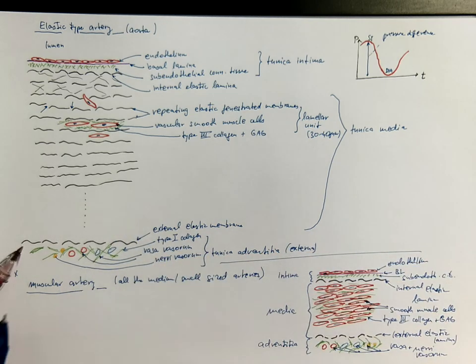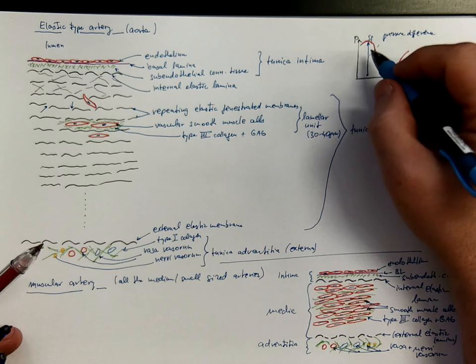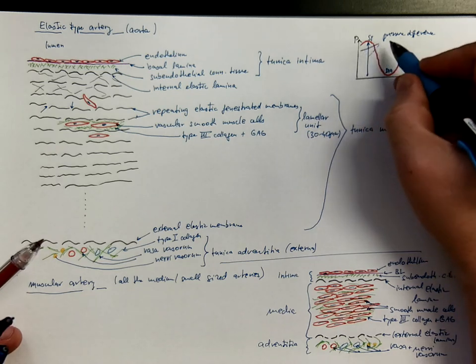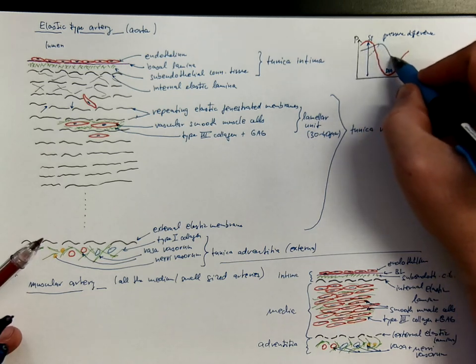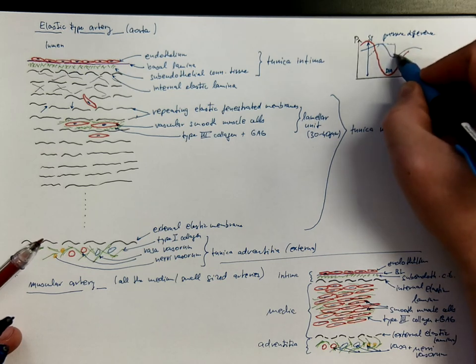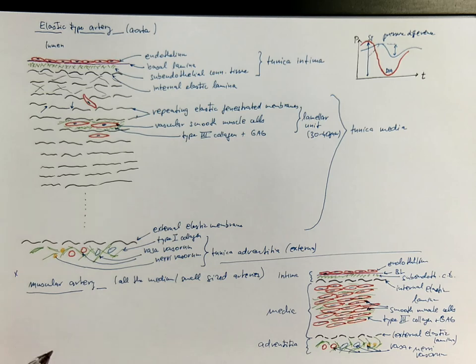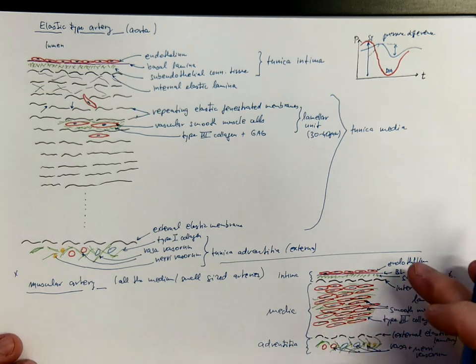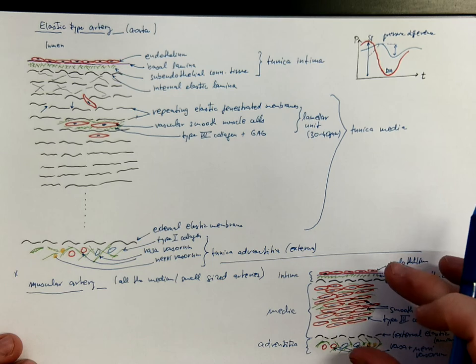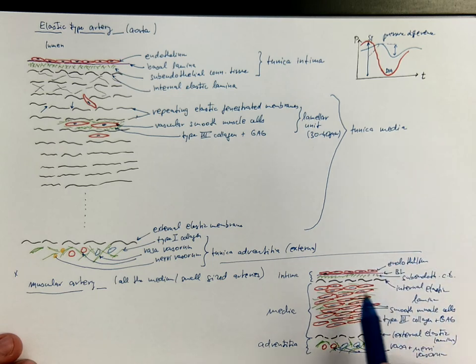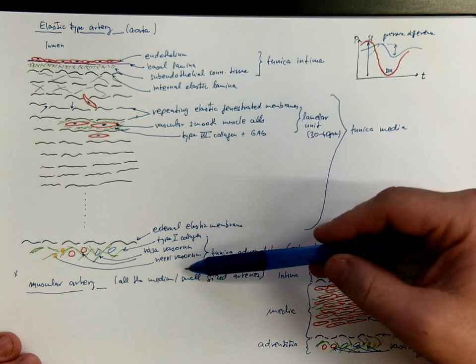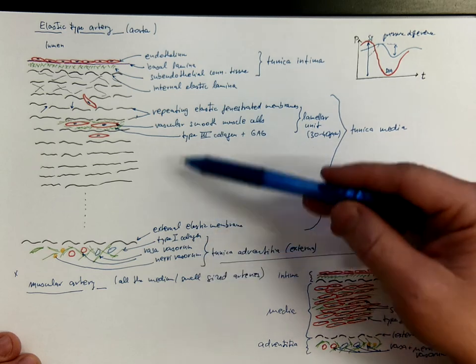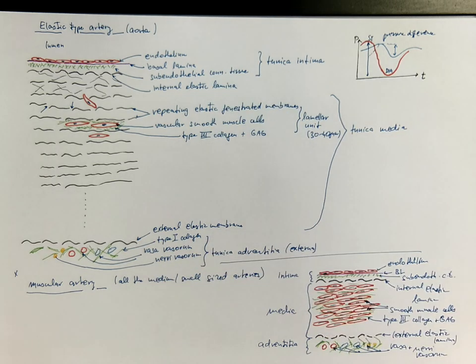While in muscular arteries the curve looks a little bit different. The difference between the systolic and diastolic blood pressure is significantly smaller. And the muscular arteries mainly react by vasoconstriction or vasodilation thanks to these really thick muscular media. Of course, these are two extremes and there are like transitions in between these two phenotypes of arteries.